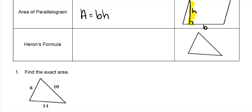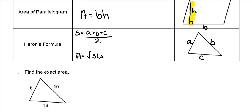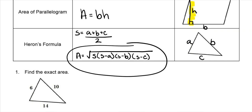Lastly, we have Heron's formula. We're going to talk about the variable S. S is the perimeter of the triangle divided by 2. If this triangle has sides A, B, and C, to figure out S you add all those sides together — because that's how we find the perimeter — and then divide by 2. But Heron's formula is for finding the area of this triangle. The formula is the square root of S times (S minus A) times (S minus B) times (S minus C).